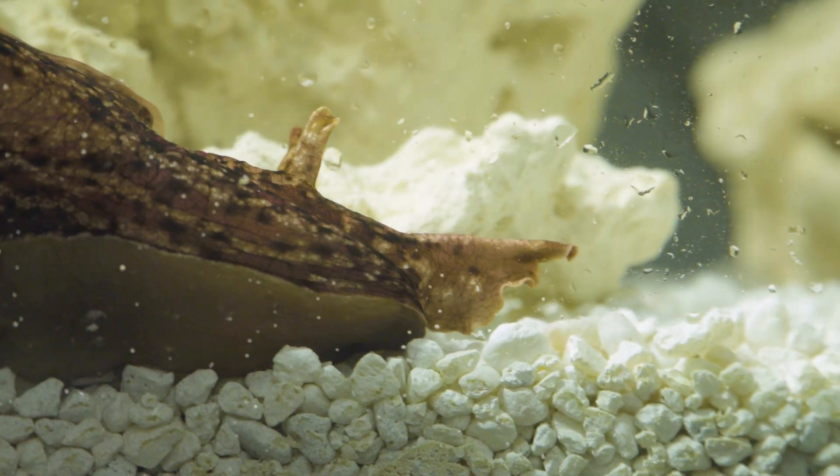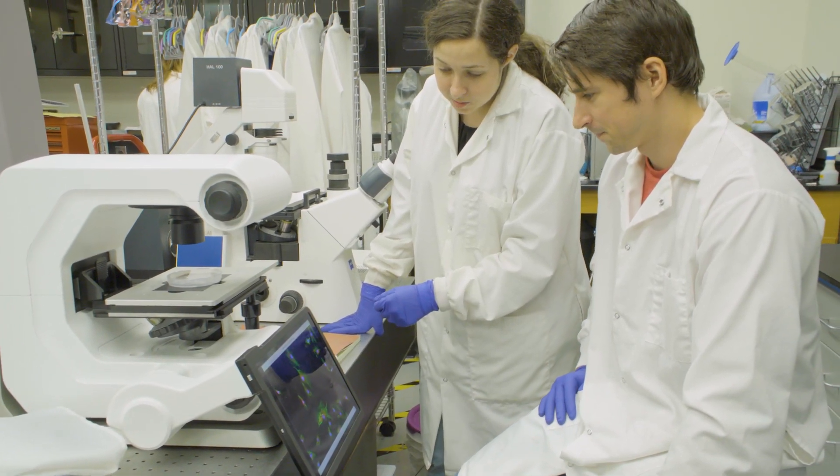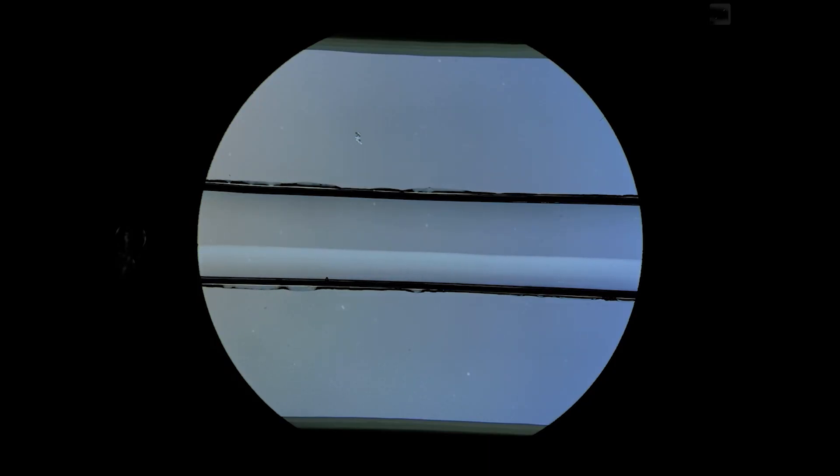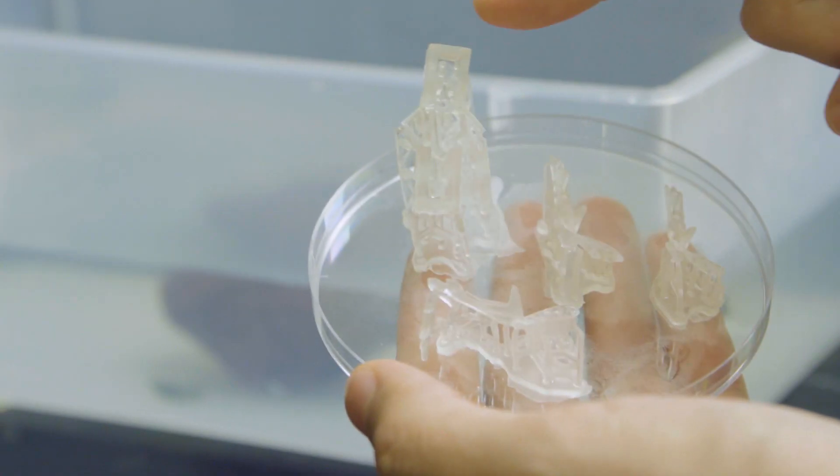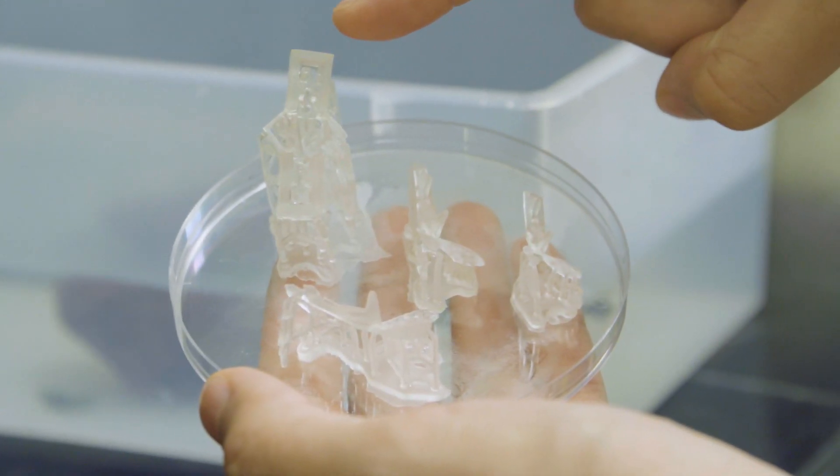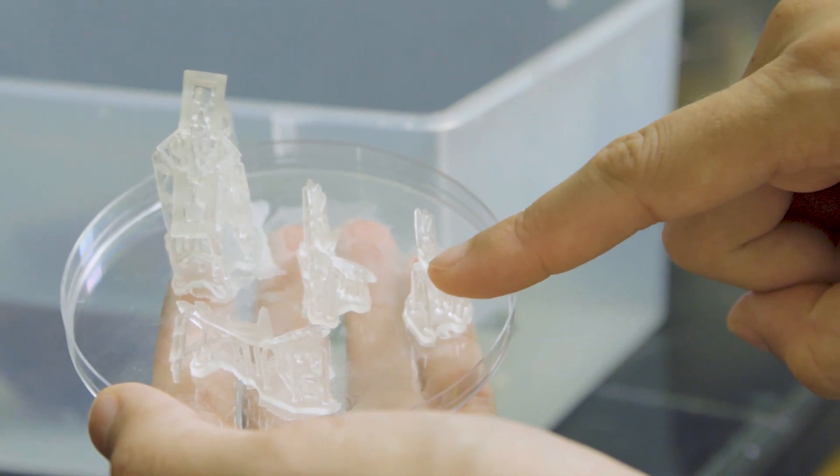My research group focuses on how we could potentially use actual living organic materials in robotic systems. For example, using muscle as an actuator or neurons as controllers and trying to use these components to build biodegradable and biocompatible biohybrid and organic robots.